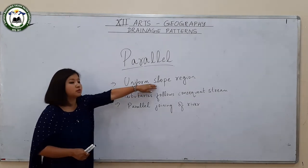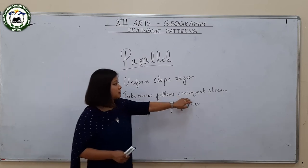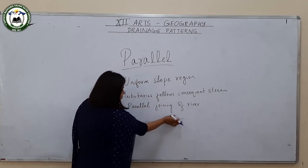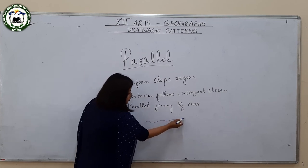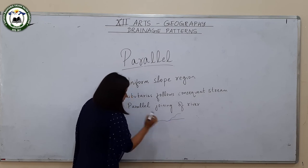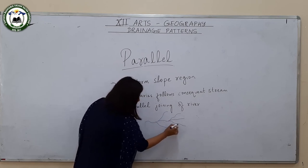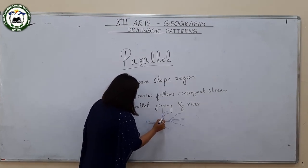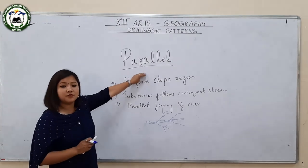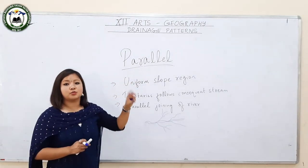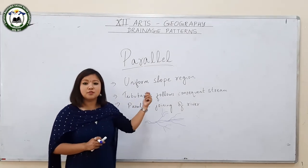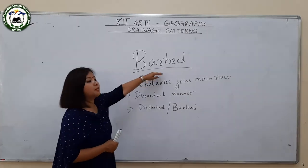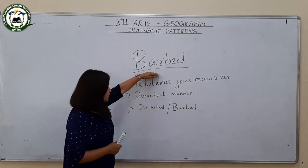Parallel drainage pattern is found in regions with uniform slope, where tributaries follow the consequent stream. The tributaries tend to join the main river in a parallel manner, following the same path. This type of parallel stream is found in river basins where rivers are swift in nature and is mostly found in the Lesser Himalayas and the western ghats of India.